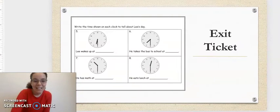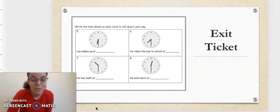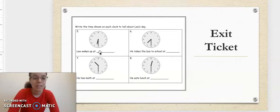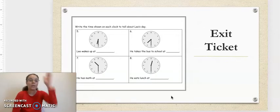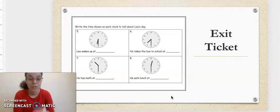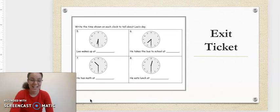Is it exit ticket time? All right. It says, write the time shown on each clock to tell about Leroy's day. So you need to write what time did Leroy wake up? What time did he take the bus to school? What time does he have math? And what time does he eat lunch? Remember, when the big hand's at the top, it means o'clock. When the minute hand or the big hand is pointing down to the 6, that means 30. Do not get trapped. I can't wait to see who gets this right. Bye, Kipsters!